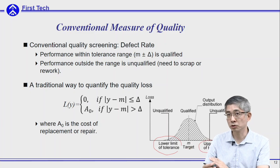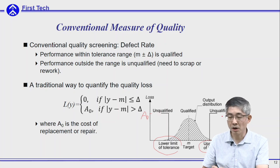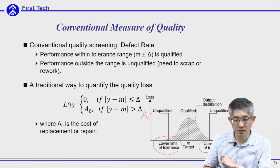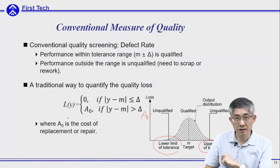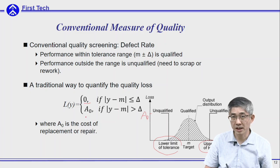Assuming the loss when the part is outside of the tolerance range is A₀, this is not a continuous criteria — anything within the range will have no loss, however anything outside the range will have loss A₀.